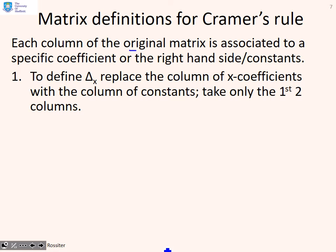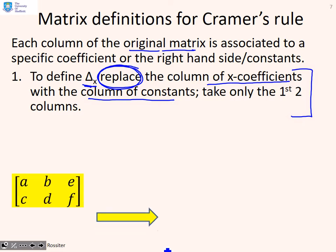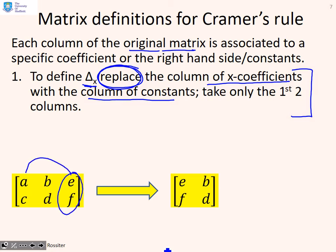Each column of the original augmented matrix is associated to a specific coefficient. The first column for the first coefficient, the second column for the second coefficient, and so on. To define delta_x, we replace the column of x coefficients with the column of constants. There's a subtle difference here. We didn't say delete the column of x coefficients, we said replace the column of x coefficients with the constants. Essentially, we're going to take this column of constant coefficients and put them in here. We're going to get rid of this a and c and replace them by e and f. So the determinant of this will now give you delta_x.